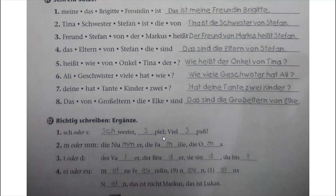Number 2: M oder Doppel-M - single M or double M. Nummer has double M. Familie - single M. Then Oma - single M. Number 3: T oder D. Vater - D. Bruder - D. Zisind - D. Du bist - T, spelling B-I-S-T. Number 4: EI oder EU. Meine Freundin - M-E-I-N-E, F-R-E-U-N-D-I-N. Neun - N-E-U-N, number 9. Eins - E-I-N-S. Nein - N-E-I-N.